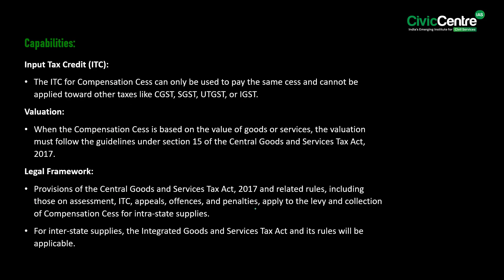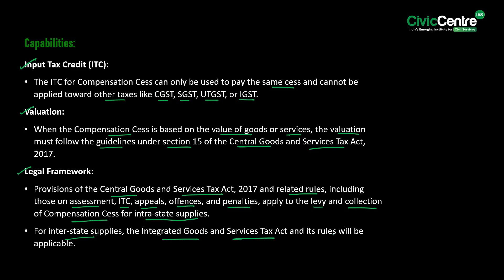Input tax credit for compensation cess can only be used to pay the same cess and cannot be applied toward other taxes like CGST, SGST, UTGST, or IGST. When compensation cess is based on the value of goods and services, valuation must follow guidelines under Section 15 of the Central Goods and Services Tax Act of 2017. The provisions of the CGST Act of 2017 and related rules — including those on assessment, ITC, appeals, offenses, and penalties — apply to the levy and collection of compensation cess. For interstate supplies, the Integrated Goods and Services Tax Act and its rules will be applicable.